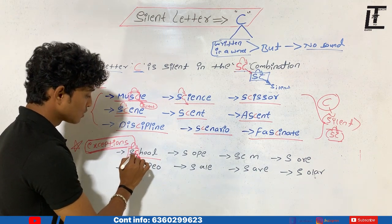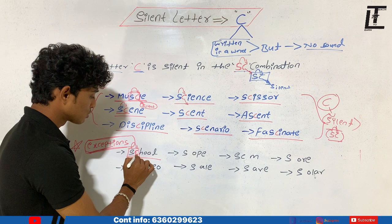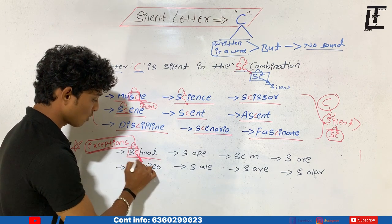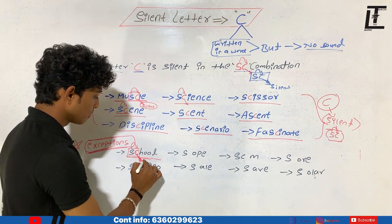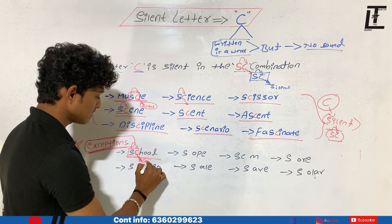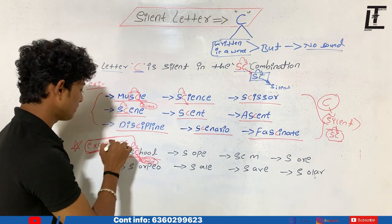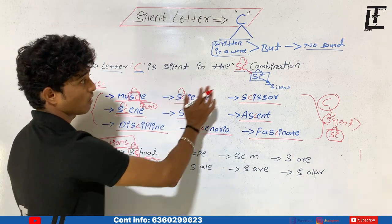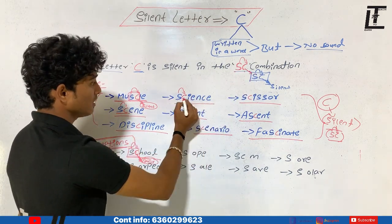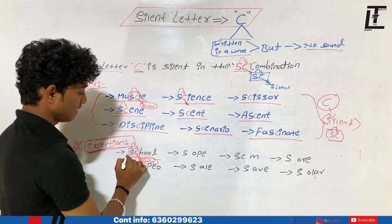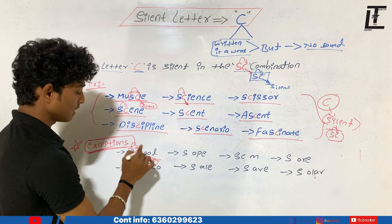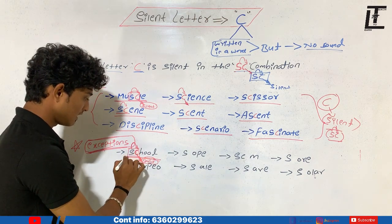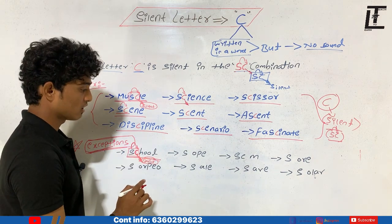In the word 'school', C is not a silent letter — C must be pronounced, there is a sound of the letter C. Why? Because it is an exception. Exception means it doesn't follow the rule. So in most SC words C is silent, but in 'school', there is a sound of C, even though C is in the SC combination.